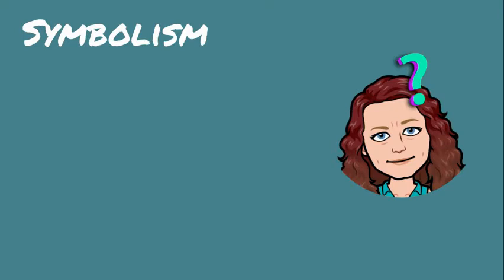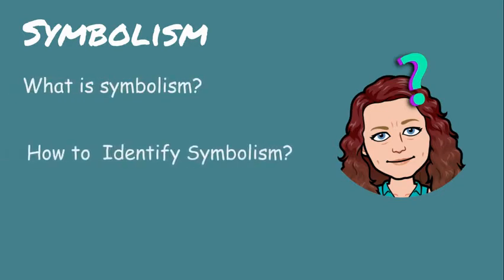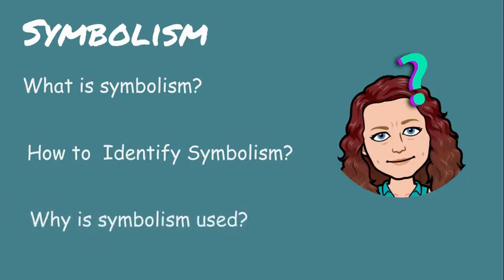Symbolism is everywhere around us. You can find it in the movies you watch, the music you listen to, the books you read, and the art you see all around you. By the end of this lesson you will understand what symbolism is, you will be able to identify symbolism, and you will understand why symbolism is used.